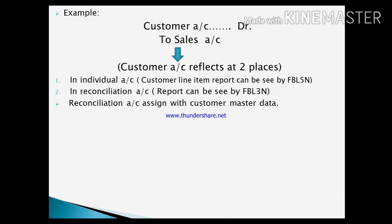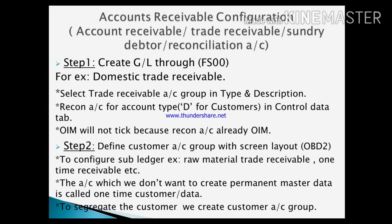In the individual account, the customer line item report can be seen using T-code FBL5N, and in the reconciliation account the report can be seen using T-code FBL3N. Now, these are the steps for accounts receivable configuration. Step 1: Create GL through FS00 — for example, domestic trade receivable. Select the trade receivable account group. In type, set account type D for customers. In the control data tab, open item management will not be ticked because the reconciliation account already has open item management ticked.